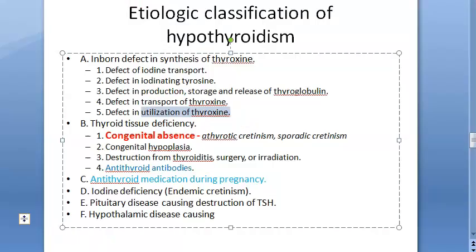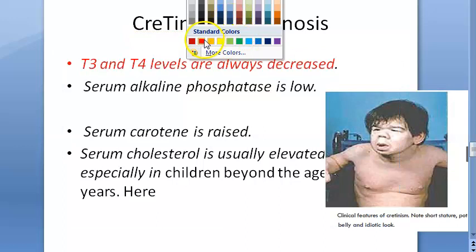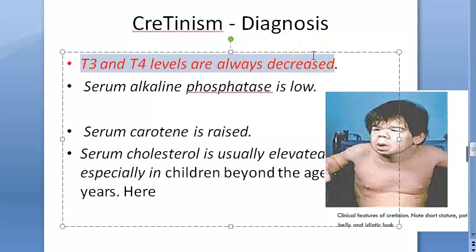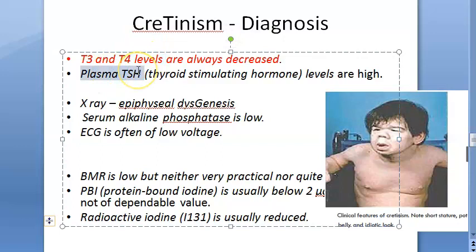For diagnosis, the most important and reliable investigation is measurement of T3 and T4 levels, which are decreased. Because thyroid hormone is low, TSH levels will be elevated. These two findings — low T3/T4 and high TSH — are the most important diagnostic criteria.